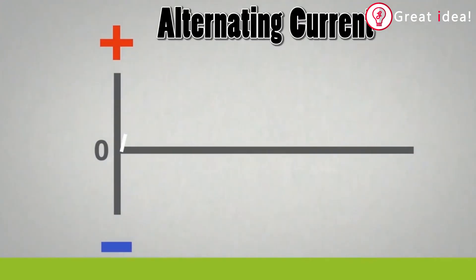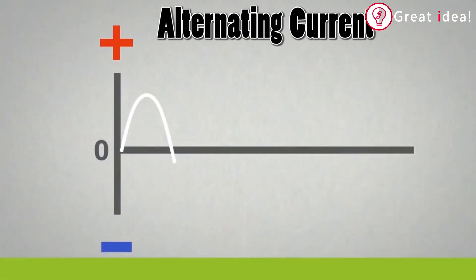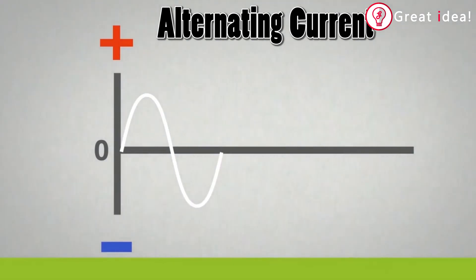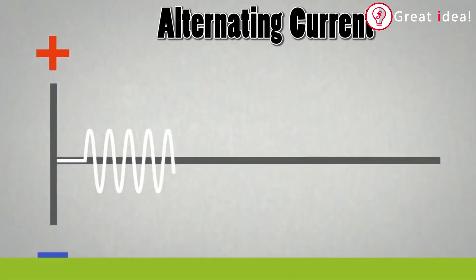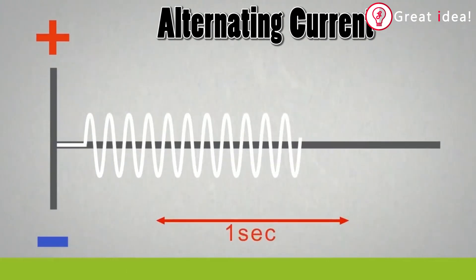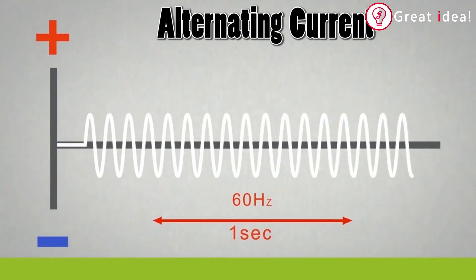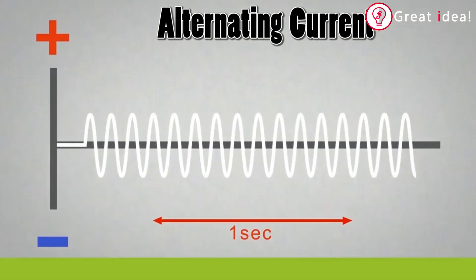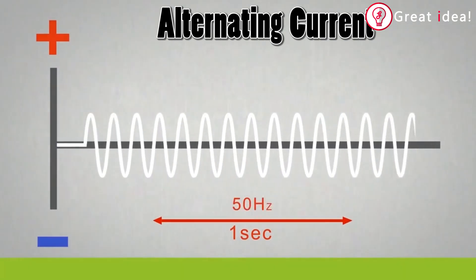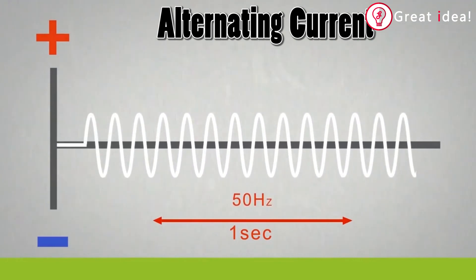If you look at the alternating current, there is a positive and negative cycle. A positive and negative cycle is a cycle. If you look at the frequency, 60Hz or 50Hz are used in the AC current. If you look at the frequency of 50Hz, there is a 50Hz cycle.